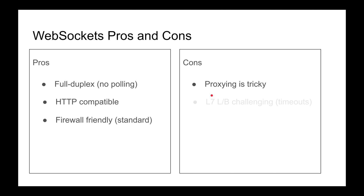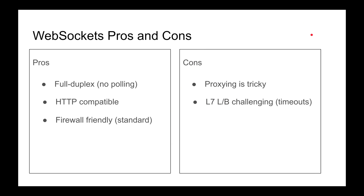I really recommend just using a layer 4 load balancer or proxy and never worrying about it. Layer 7 load balancing is very challenging. Another con is dealing with timeouts — HTTP proxies normally have a server timeout, but WebSockets shouldn't have timeouts because you're using a persistent connection. It's going to stay open for a long time, even if not actively used, and you shouldn't want that terminated.